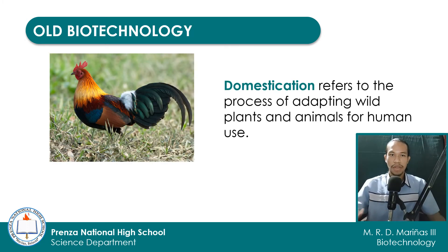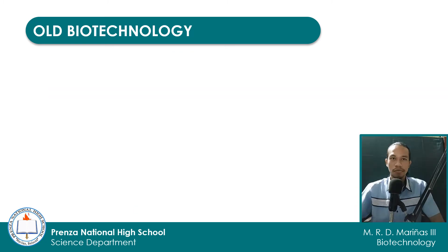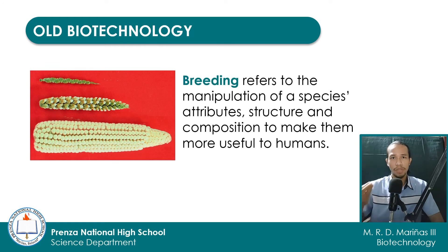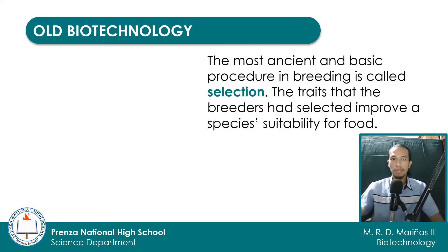Domestication refers to the process of adapting wild plants and animals for human use. As you can see in the picture on the slide, the red jungle fowl were domesticated by early Southeast Asians for thousands of years until we developed the chicken that we commonly encounter in our grocery. Domestication also involves the process of breeding, which refers to the manipulation of a species' attributes, structures, and composition to make them more useful to humans. The most ancient and basic procedure in breeding is called selection, and the traits that the breeders had selected improve a species' suitability for food.